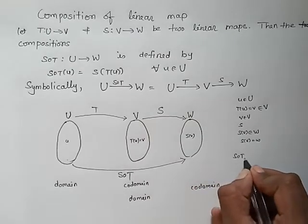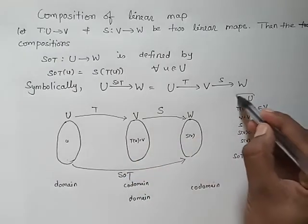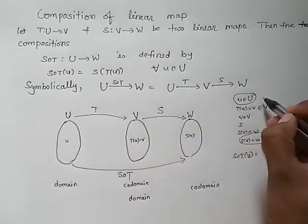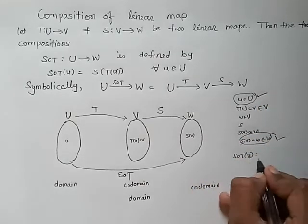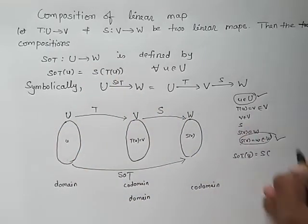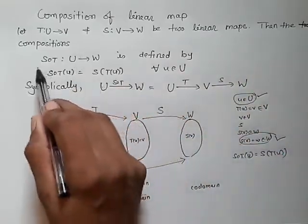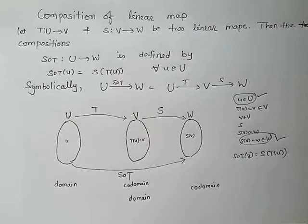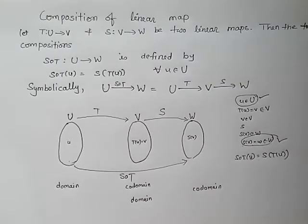So for the composition S∘T, if we take one element u from U, we get an image w in W. This means the composition map goes from U to W. Here S(v) = S(T(u)), so (S∘T)(u) = S(T(u)). That is how we define the composition of linear maps. Now let us do our first example.